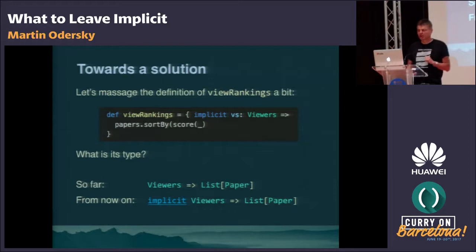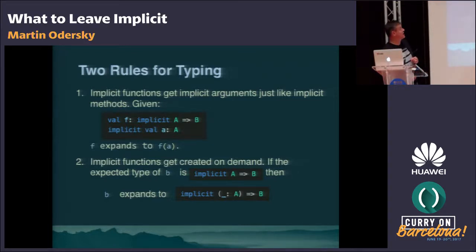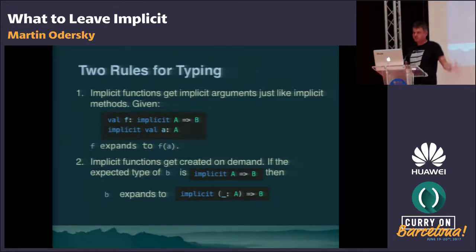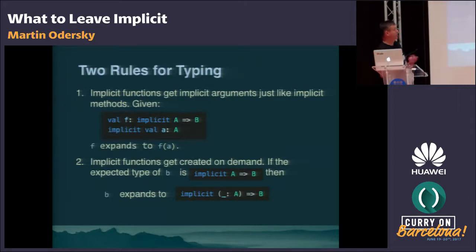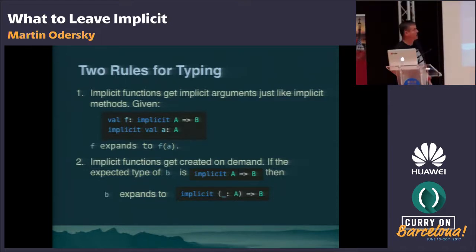The rules to produce and eliminate these implicit function types are essentially just two. The first rule says: implicit functions get implicit arguments just like implicit methods — if you have an implicit function f and an implicit argument a and you write f, it expands to f(a). The dual is that implicit functions get created on demand: if the expected type of some block of code b is `implicit A => B`, then b expands to an implicit closure `implicit (unnamed: A) => b`.